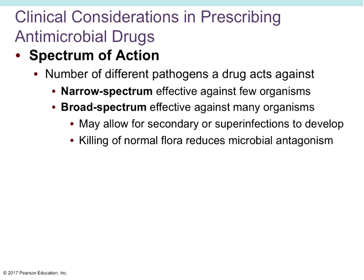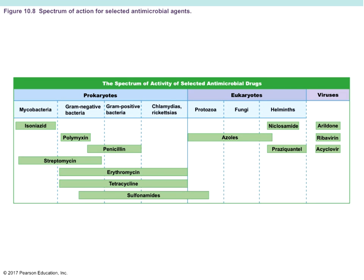Spectrum of action refers to the number of different pathogens that will be affected by a drug. A narrow spectrum means it's only effective against a few different organisms. Broad spectrum antibiotics are effective against many different microbes, but they kill off not only bad bacteria but also the good bacteria — the normal microbiota that help your body. This can allow for a secondary infection or superinfection to develop because the normal flora has been disrupted.